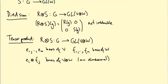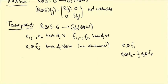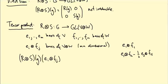Vectors in this space are things like e₁ ⊗ f₁, or e₁ ⊗ f₂ minus a half e₃ ⊗ f₅ — those are vectors in our vector space. To define the representation, I need to say how r ⊗ s of g acts on vectors. Since it's a linear map, I just need to specify what it does to basis elements eᵢ ⊗ fⱼ, or more generally to any vector of the form v ⊗ w.